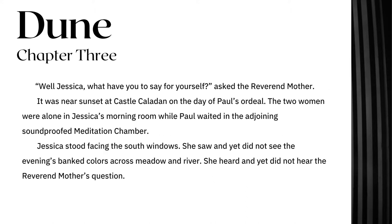Dune, Chapter 3: 'Well, Jessica, what have you to say for yourself? asked the Reverend Mother. It was near sunset at Castle Caladan on the day of Paul's ordeal. The two women were alone in Jessica's morning room, while Paul waited in the adjoining soundproof meditation chamber. Jessica stood facing the south windows. She saw and yet did not see the evening's banked colours across meadow and river. She heard and yet did not hear the Reverend Mother's question.'